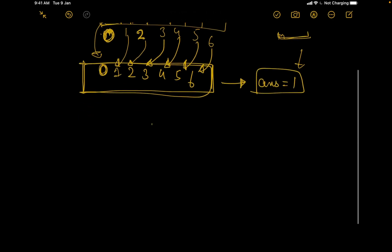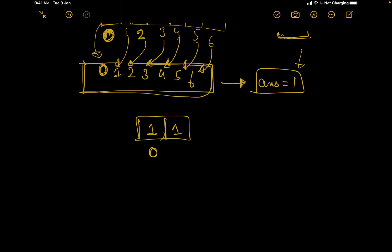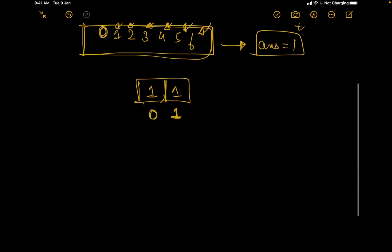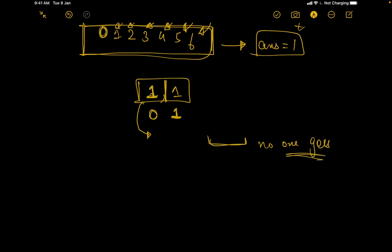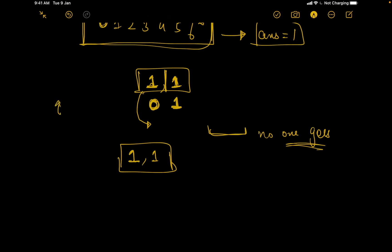For Example 1, the array is [1, 1]. Person 0 says they'd go if at least one person is going; person 1 says the same. Can no one go? Yes — if no one goes, both are happy sitting at home since neither wanted to go unless someone else was going. Can both go? Yes — each has a company of one other person. If only person 0 goes, they'd be unhappy since they need one more person.